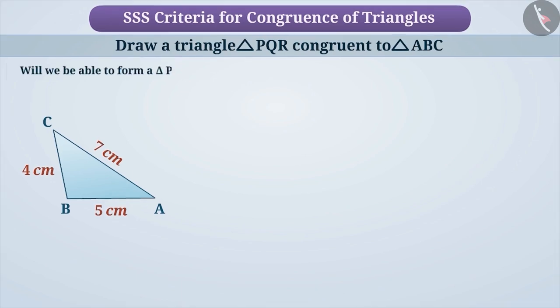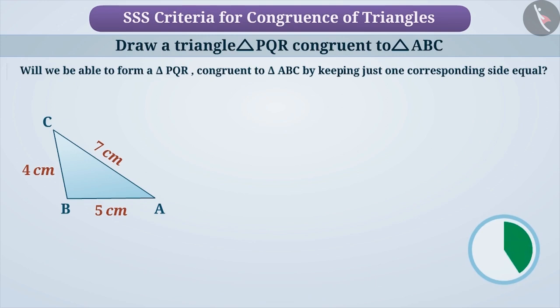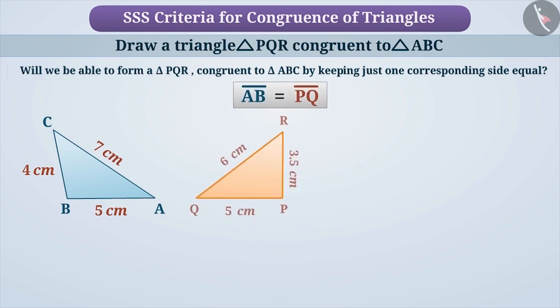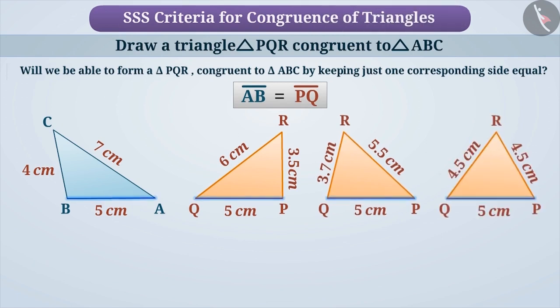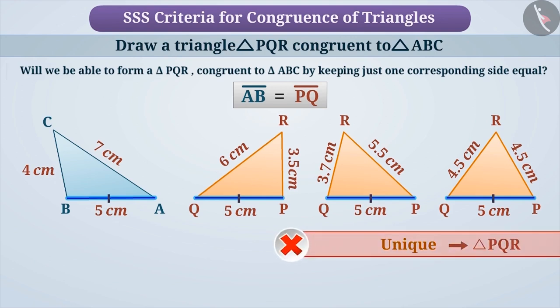Will we be able to form a triangle PQR congruent to triangle ABC by keeping just one corresponding side equal? Think for a while. Let me explain. We can draw triangle PQR in different ways by keeping only one side AB equal to PQ. But it is still not sufficient enough to form a unique triangle PQR. It is difficult to say whether triangle PQR is congruent to triangle ABC or not.